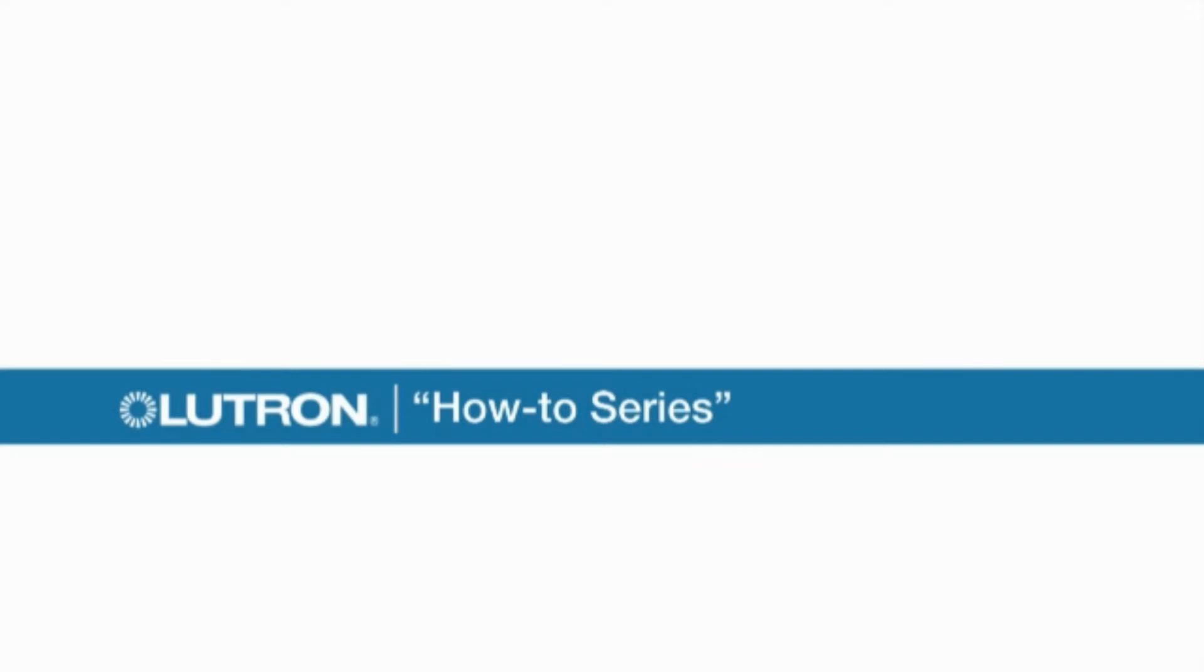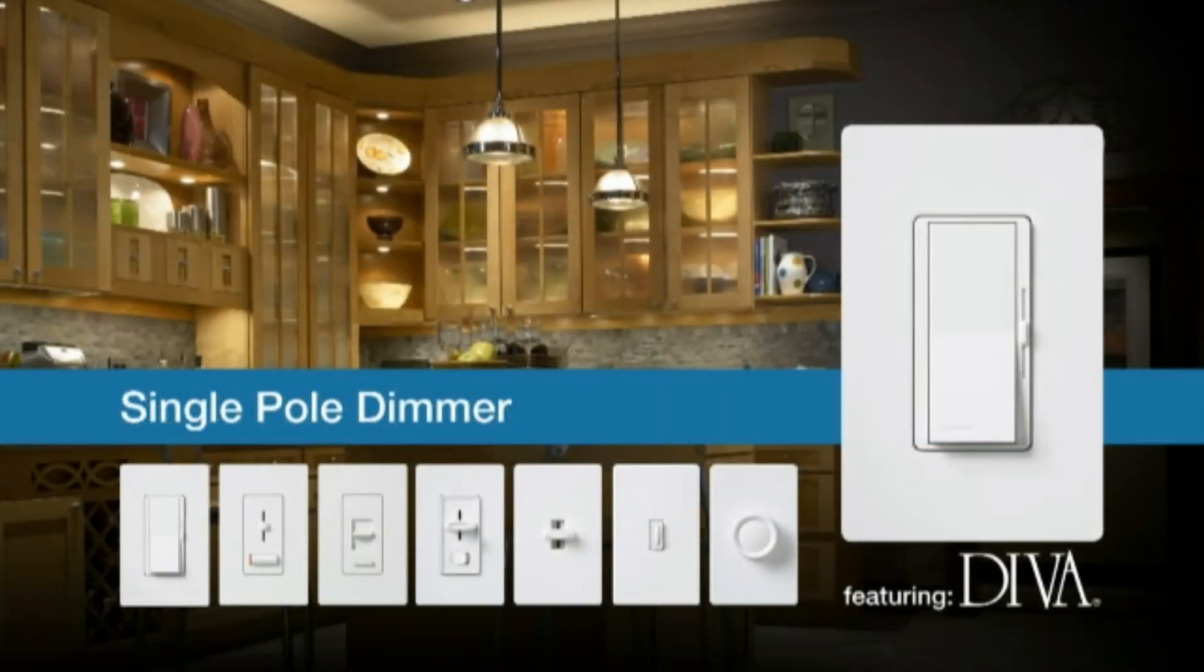Welcome to Lutron's How-To Series. In this segment, we'll show you how to install a dimmer for a single pole application. In this application, a single switch controls one lighting fixture or a group of lighting fixtures.